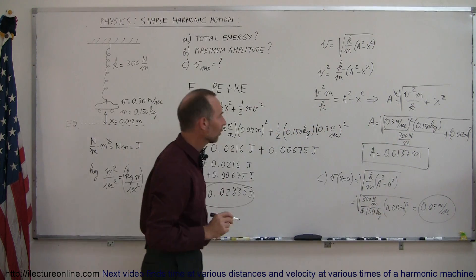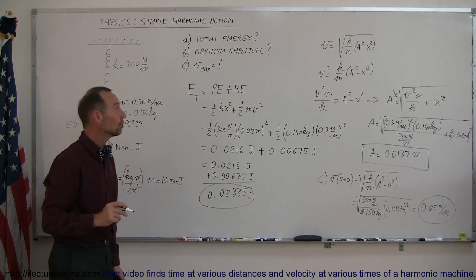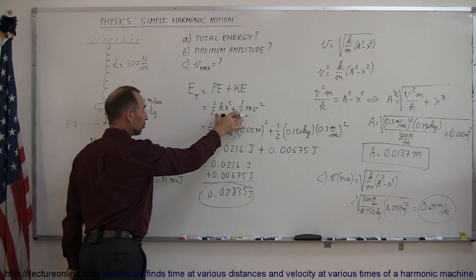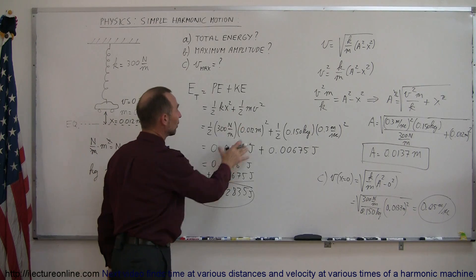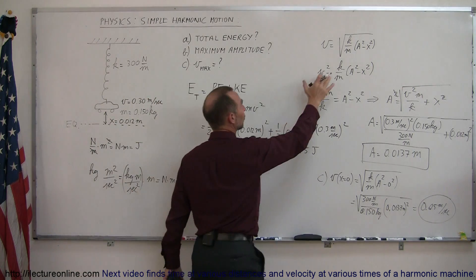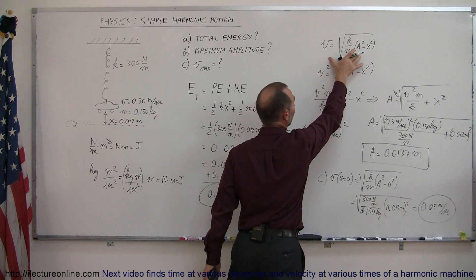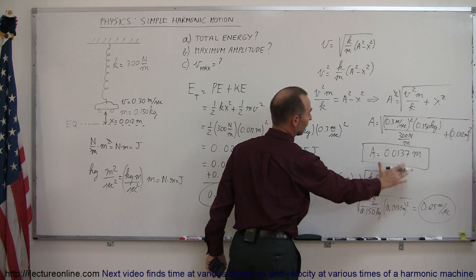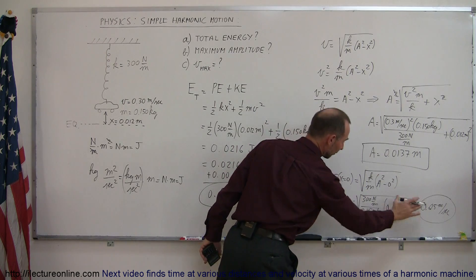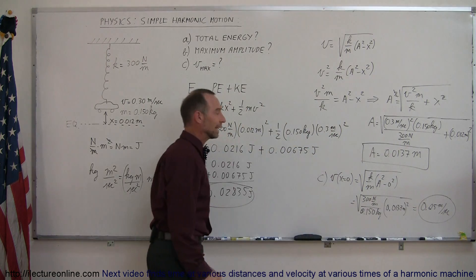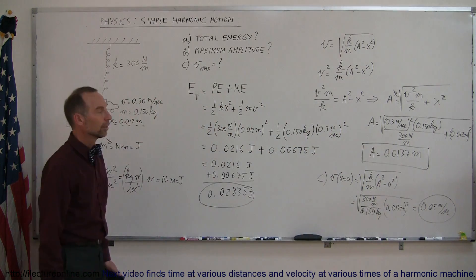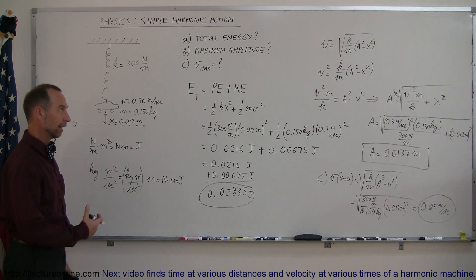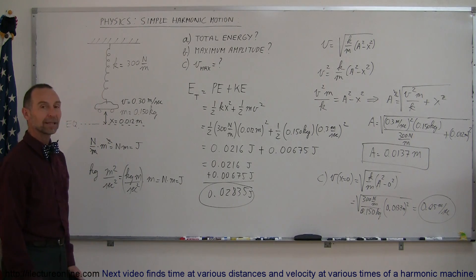Using the same energy equation, we found the total energy, derived a velocity expression in terms of x to find the amplitude, and by plugging in the various numbers we can find the velocity anywhere along the motion. And that's how you do a problem like that. Thank you.